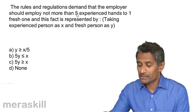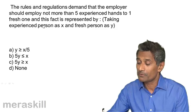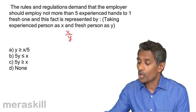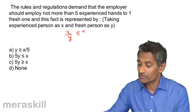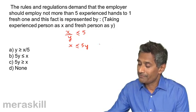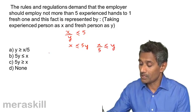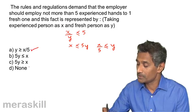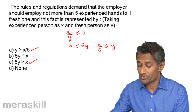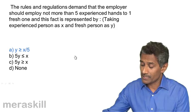This next example is similar to the earlier one. The rules demand the employer should employ not more than 5 experienced hands to one fresh one. So x over y is not more than 5, meaning x over y is less than or equal to 5, which gives x is less than or equal to 5y, or equivalently y is greater than or equal to x by 5. Among the options, y greater than or equal to x by 5 is one possibility, and x less than or equal to 5y is another. The first case is confirmed as the answer.